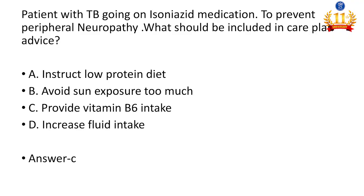Next question: a patient with TB is on Isoniazid medication. To prevent peripheral neuropathy, what should be included in the care plan? Options are: instruct low protein diet, avoid sun exposure, provide vitamin B6 intake, and increase fluid intake.